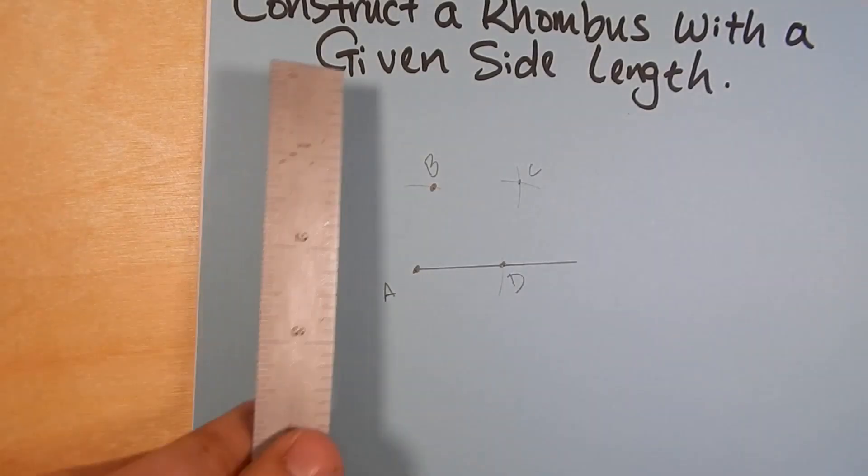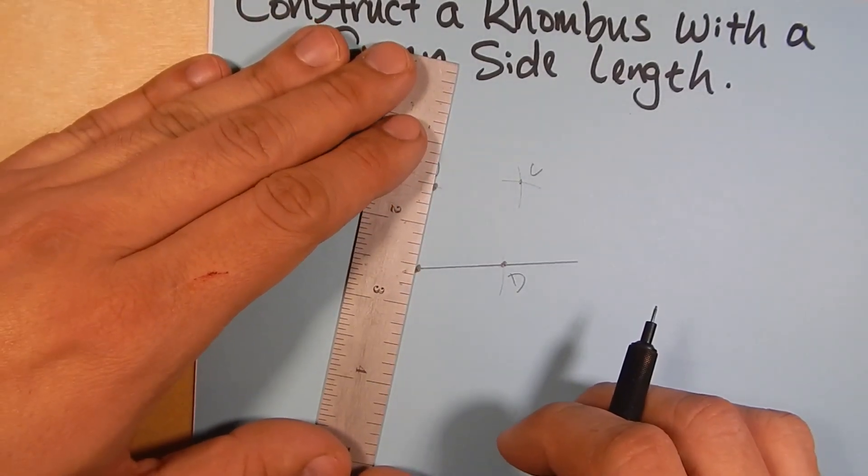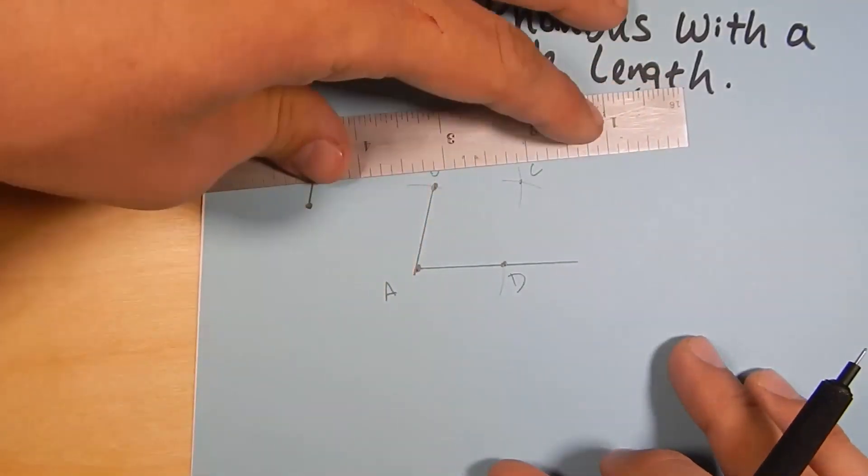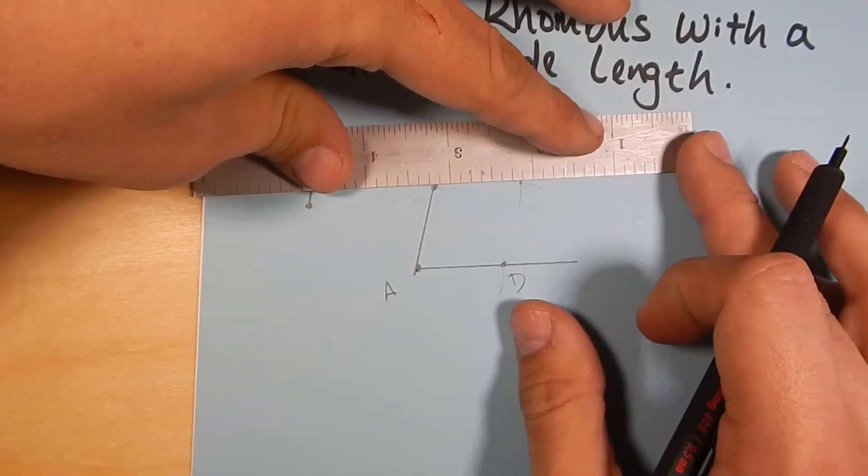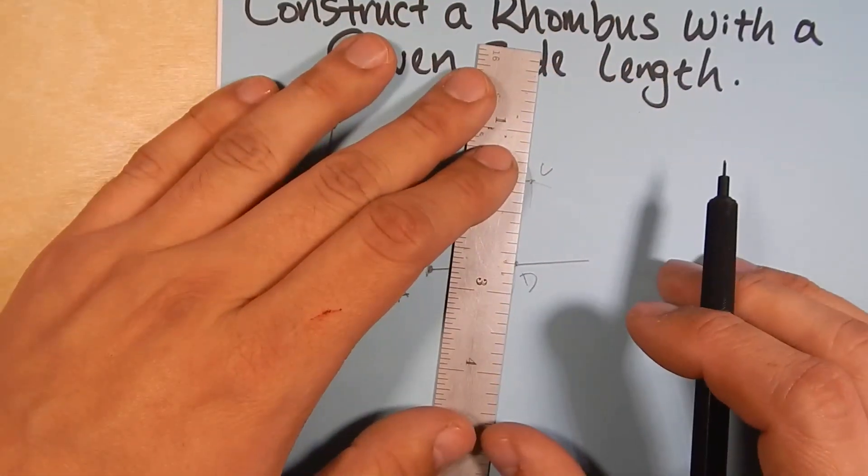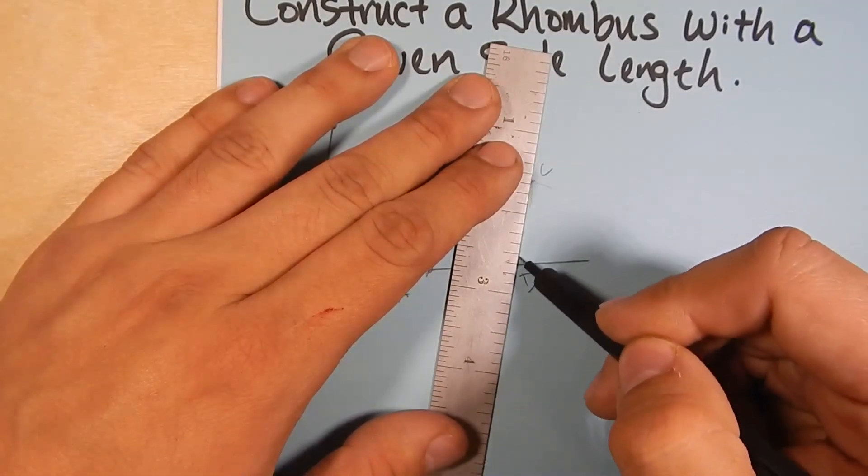So now we can kind of see this rhombus start to take shape. So we have from A to B, we're going to make a segment. From B to C, we are going to make a segment. And from C to D, we're going to make another segment. And that is our rhombus.